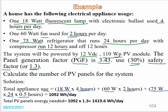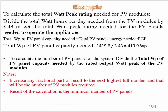The total PV panels energy needed is 1092 Wh/day multiplied by the safety factor of 1.3, giving a final result of 1419.6 watt-hours per day. This is the total energy needed for the house.